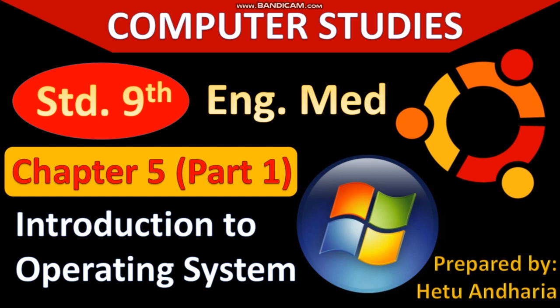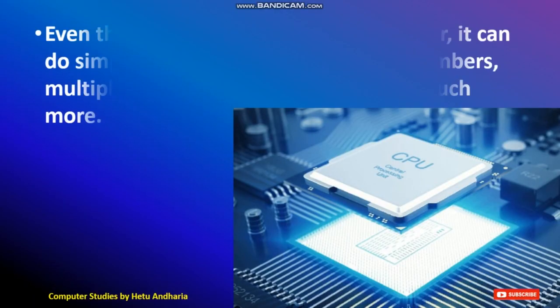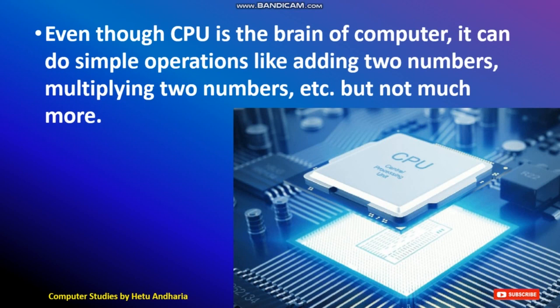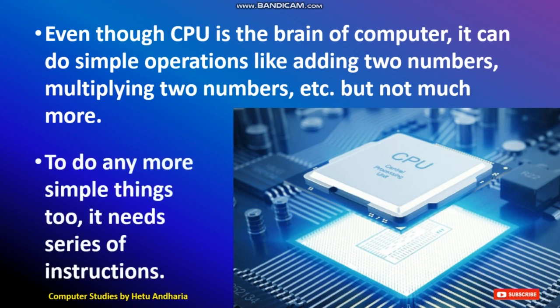This chapter is a little bit difficult, but I have tried my level best to make it easy and understandable. Now, even though the CPU is the brain of the computer, it can only do simple operations like adding or multiplying two numbers. From childhood you have been taught that CPU — the central processing unit — is the brain of the computer.